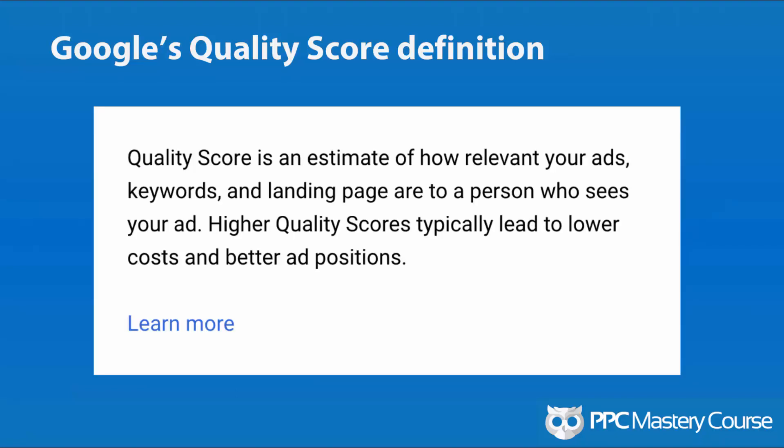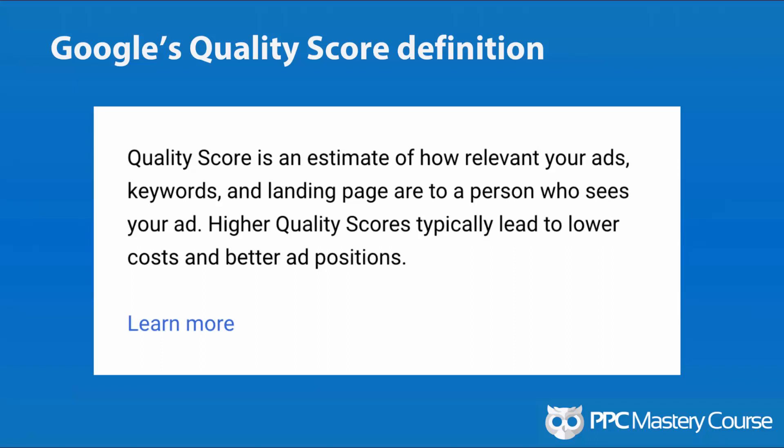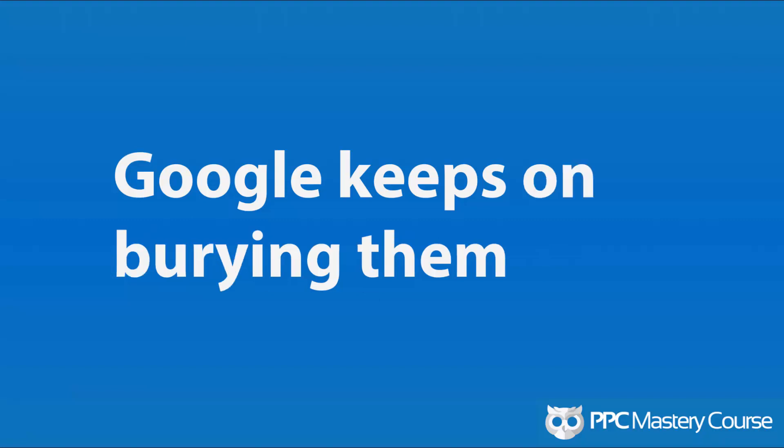Here's Google's definition of quality scores: it's an estimate of how relevant your ads, keywords, and landing page are to a person who sees your ad. Higher quality scores typically lead to lower costs and better ad positions. This applies to ad rank and the ad discounter — all the things we learn about in PPC Course — right here with quality scores.